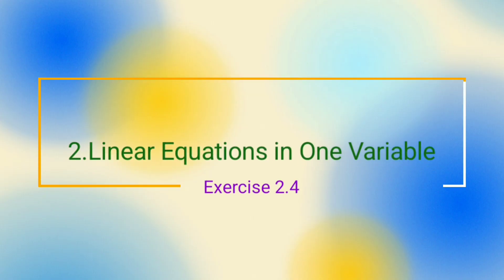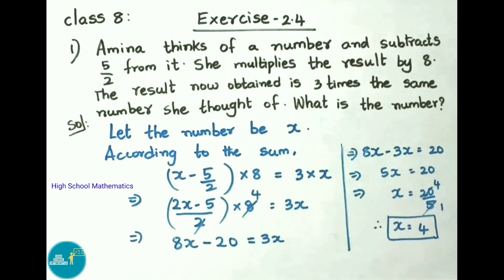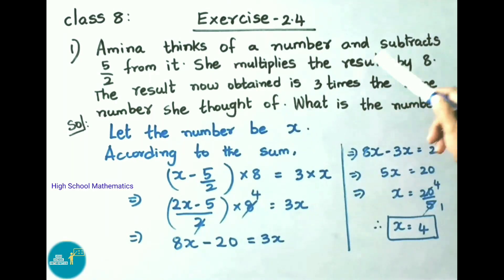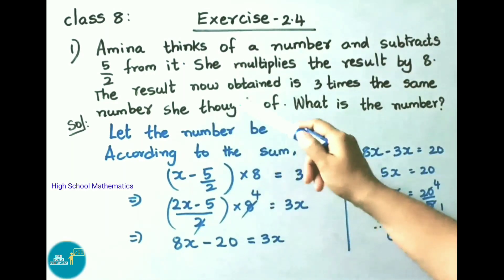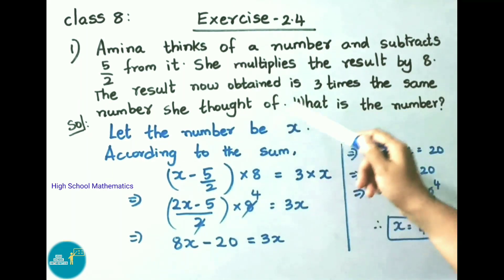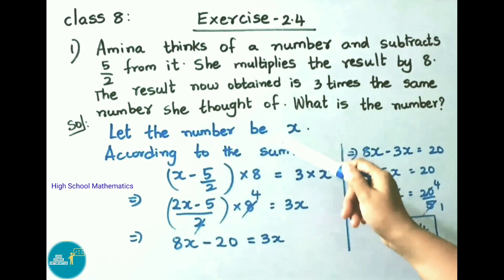Hello everyone, welcome to the High School Mathematics channel. Today we are going to learn Class 8, Chapter 2 - Linear Equations in One Variable, Exercise 2.4. Question number 1: Amina thinks of a number and subtracts 5/2 from it. She multiplies the result by 8. The result now obtained is 3 times the same number she thought of. What is the number?